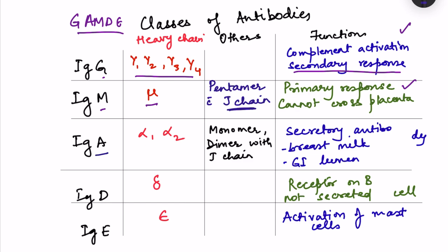IgA has alpha 1 or alpha 2 heavy chains. It can be a monomer circulating in blood or a dimer attached by J chains. IgA is a secretory antibody — secreted into the lumen of the GI tract and in breast milk — providing immunity to newborns. For secretion, a secretory chain synthesized by epithelial cells is attached to the antibody structure.